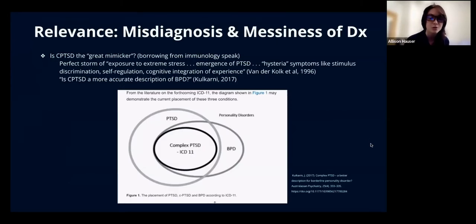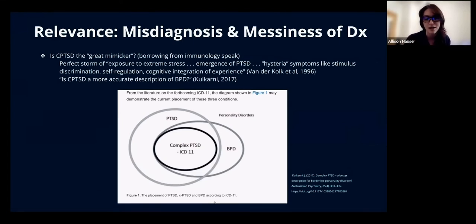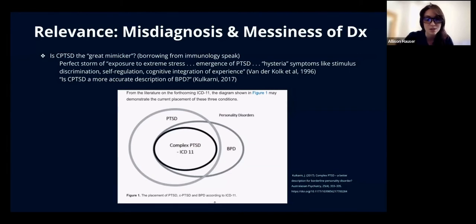Moving forward more specifically to CPTSD — complex post-traumatic stress — we can borrow from the language of biomedical models around immunology. There are some autoimmune disorders like sarcoidosis that are considered the great mimicker of other diagnoses because they have overlap in a lot of different symptomology. Shortness of breath, low vitamin D, chronic fatigue and arthritic pains, rashes — maybe we're going to look at lupus, but it turns out, if we do biopsies, we find sarcoidosis. So in autoimmune speak, disorders can mimic each other — camouflaging chameleons. Our theory here is: can complex post-traumatic stress act in the DSM world as the great mimicker? It could look like a lot of different things.